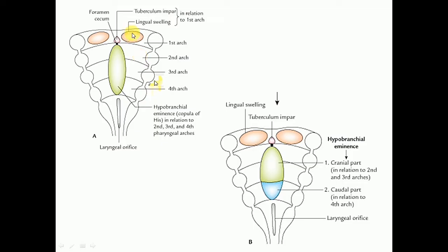The medial-most parts of the first arch, that is the mandibular arch, proliferate and form two lingual swellings. In between the two lingual swellings, another midline swelling is formed, which is known as the tuberculum impar.